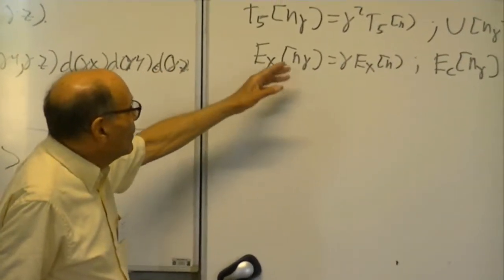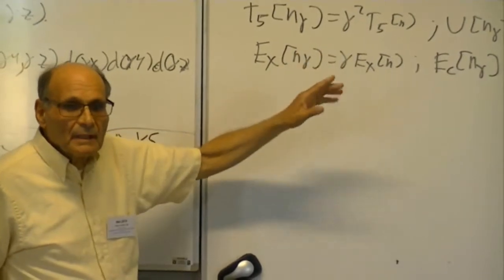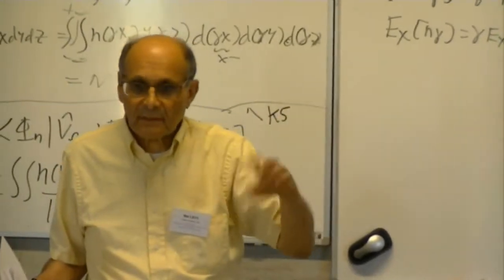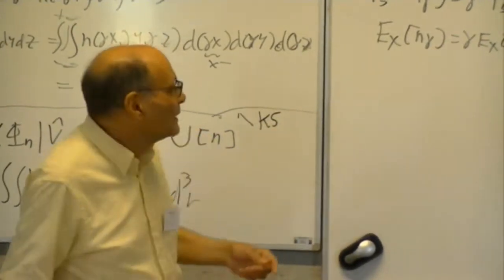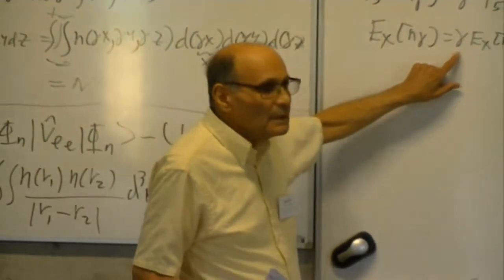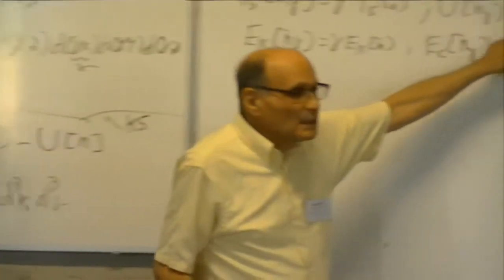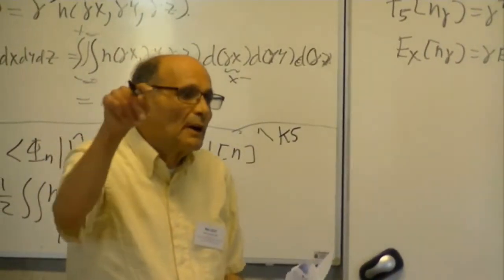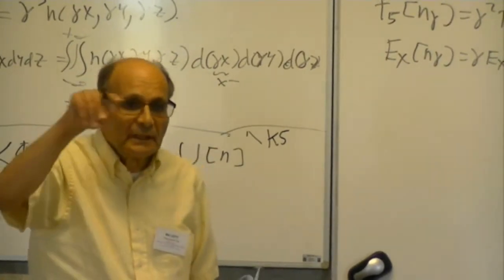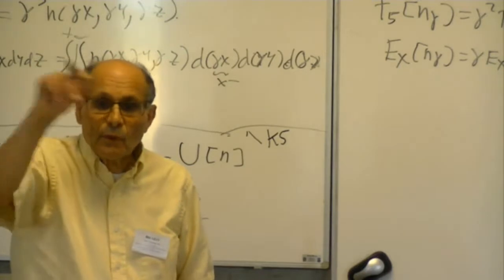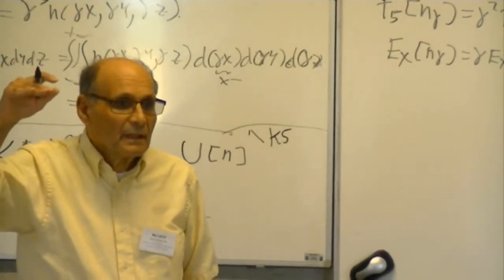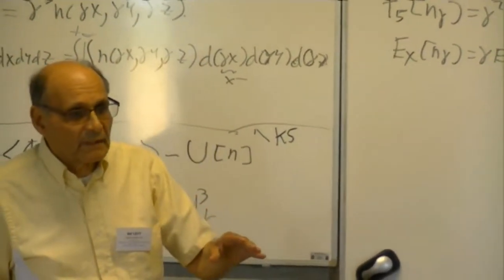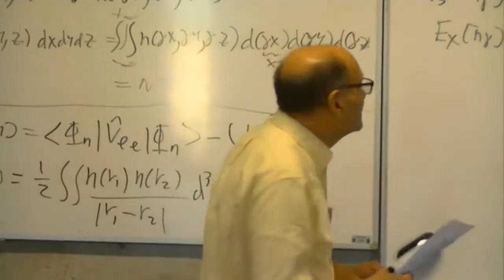Why gamma squared for Ts? The gamma squared arises from the fact that the kinetic operator involves a second derivative. The gamma for U and Vx arises from the fact that the operator involves |Ri - Rj| to the negative one power—so it's gamma to the one.